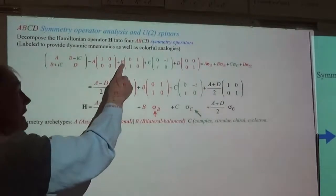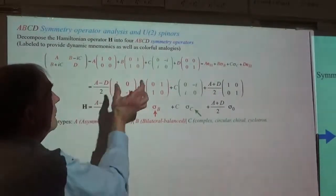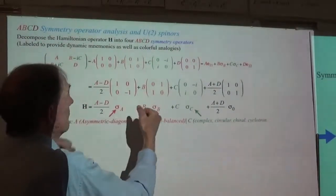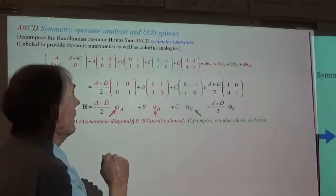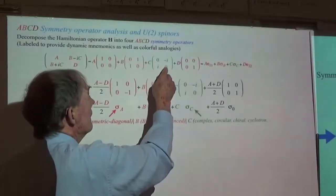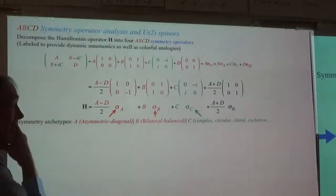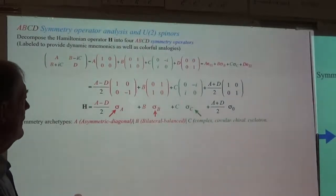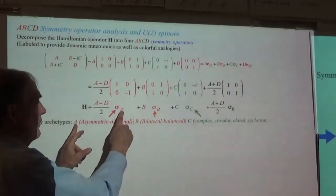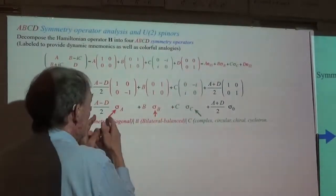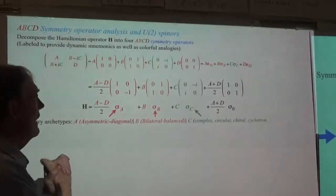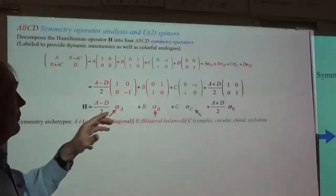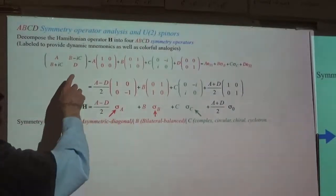We're going to have a B thing — that's the bilateral B symmetry we talked about when we did the two equal masses with equal spring frequencies and coupling between them. This one right here is the weird one. I felt we had to have mnemonics, as I do for everything. This guy here stands for asymmetric diagonal — it's the half sum of A and D. This is Pauli's operator Z right here.